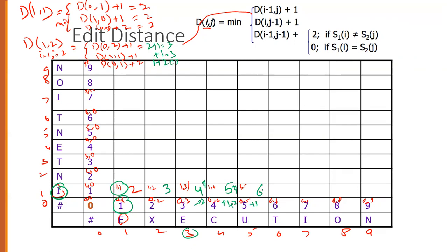Continuing along row 1: here we have 6 plus 1, and 5 plus 2, and eventually the cost for this cell is 7.